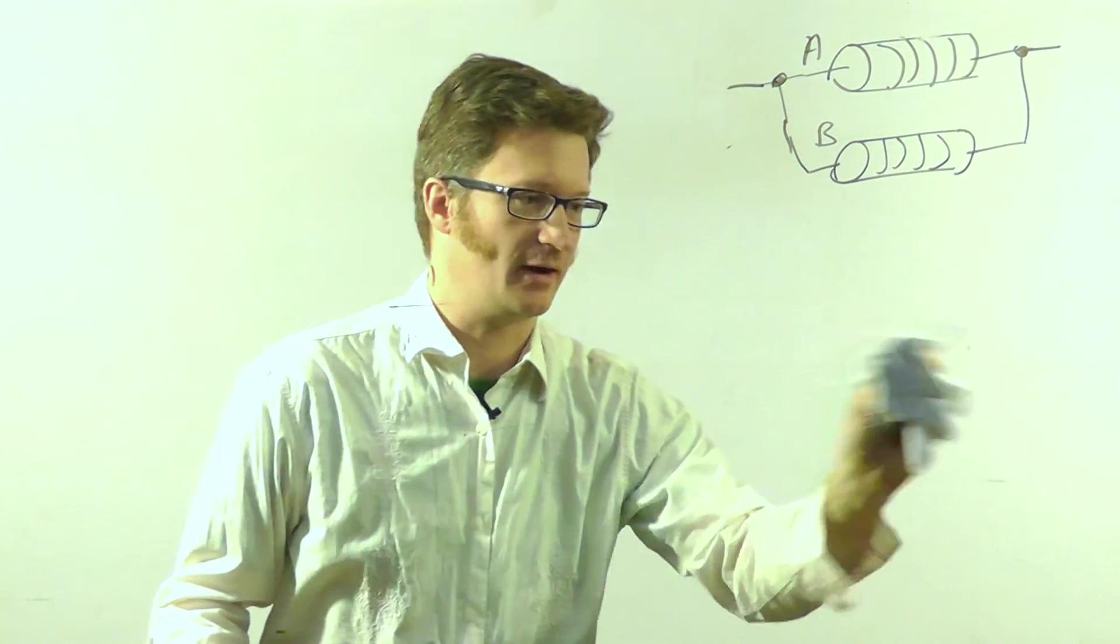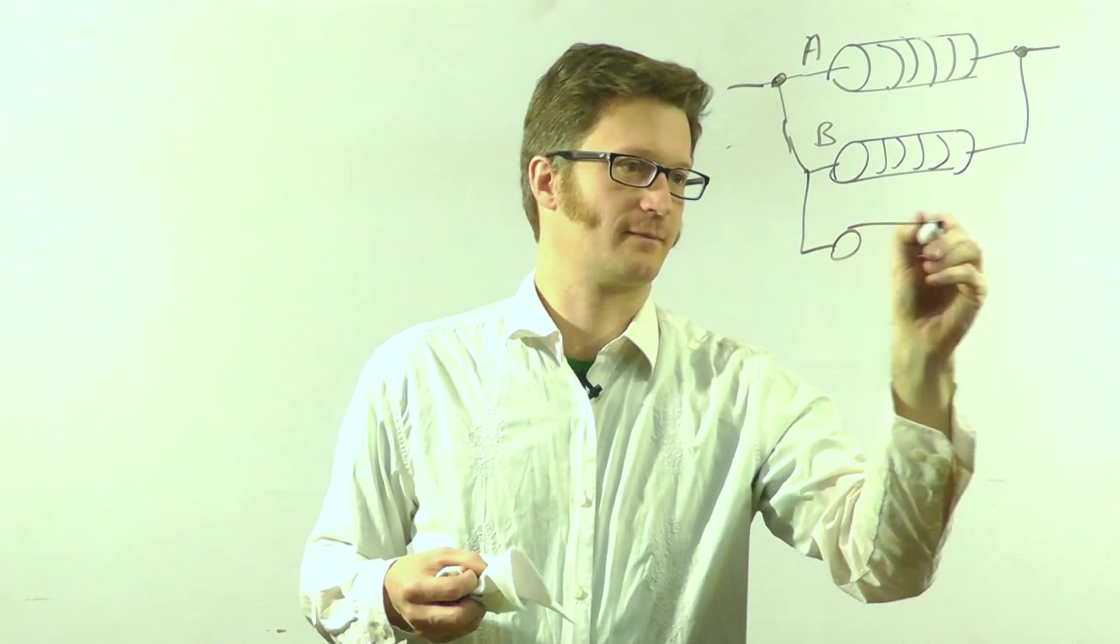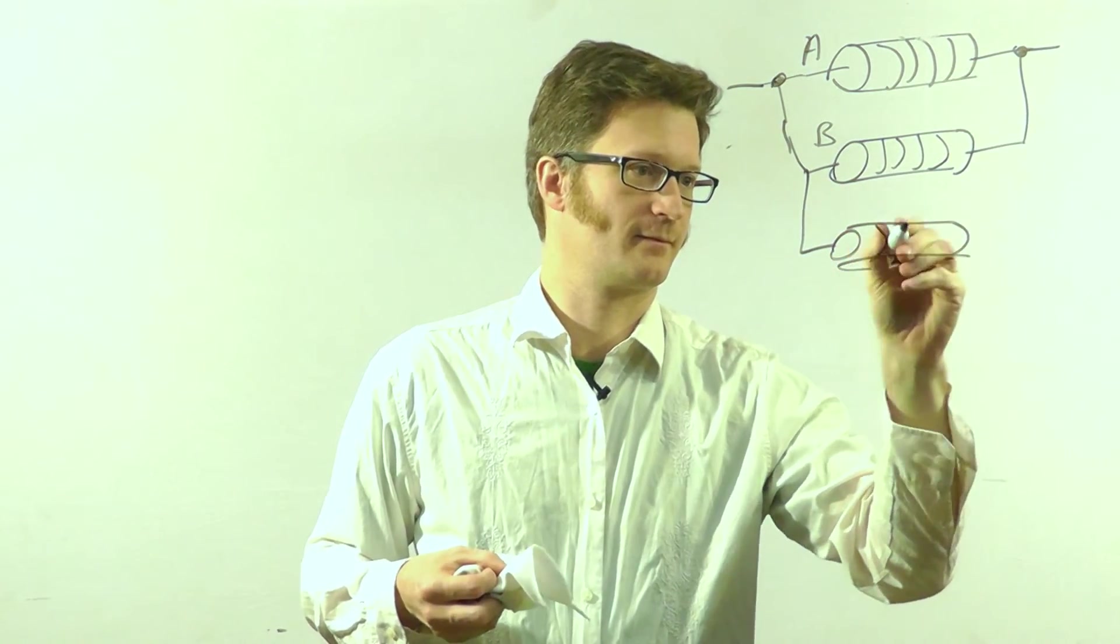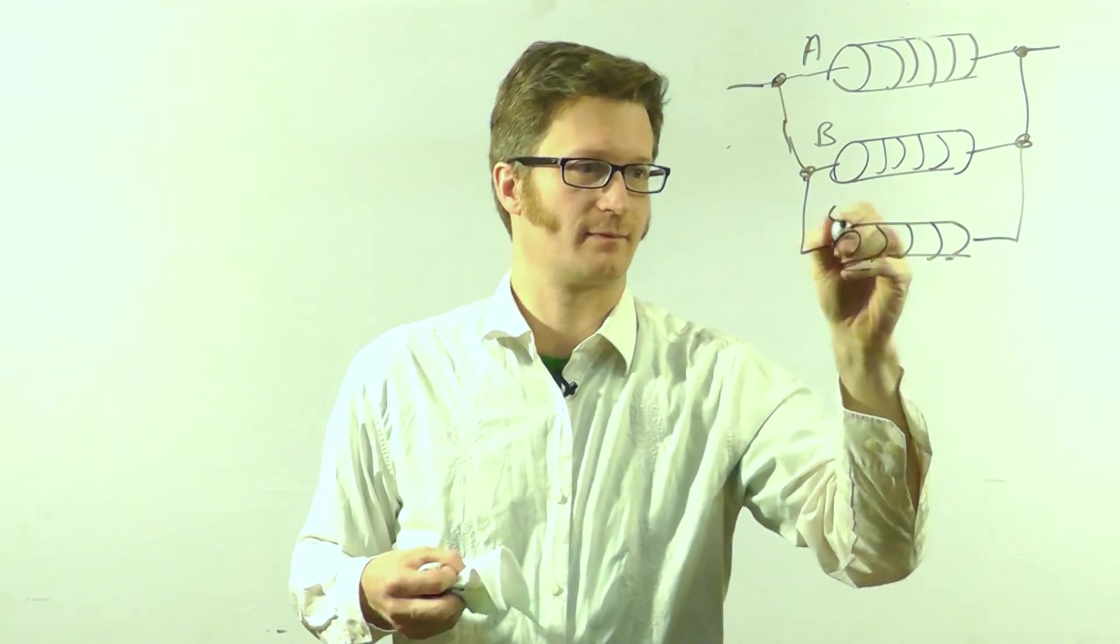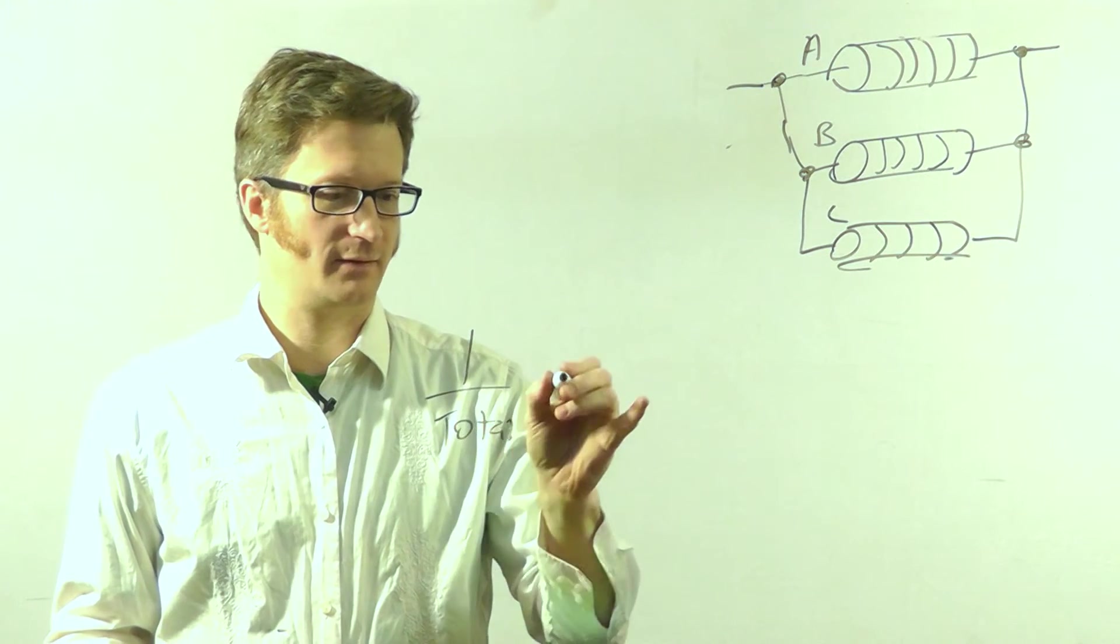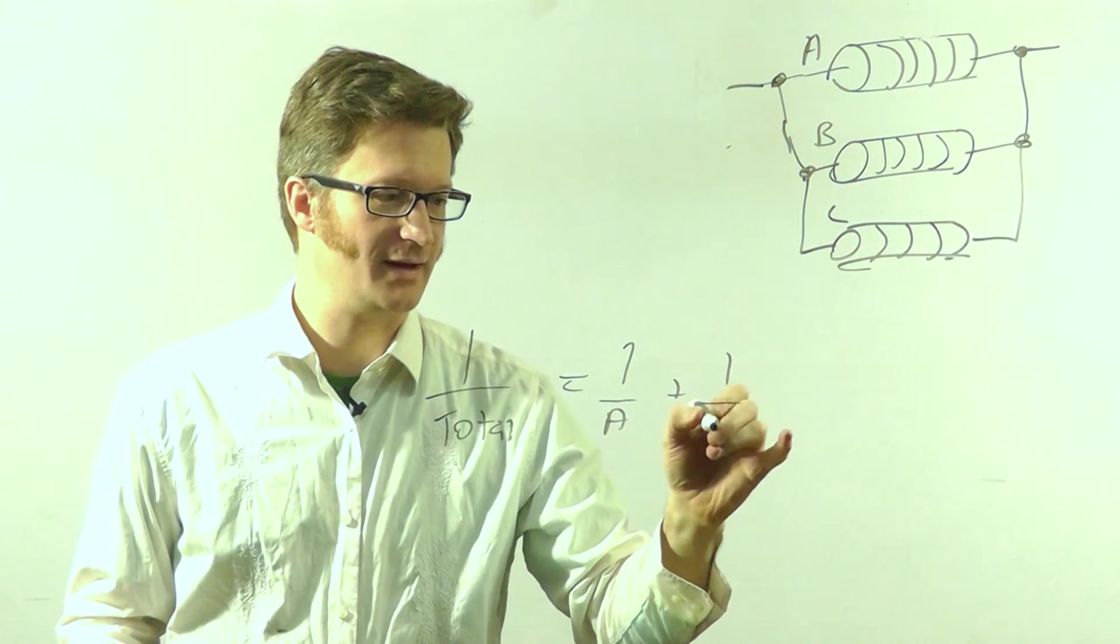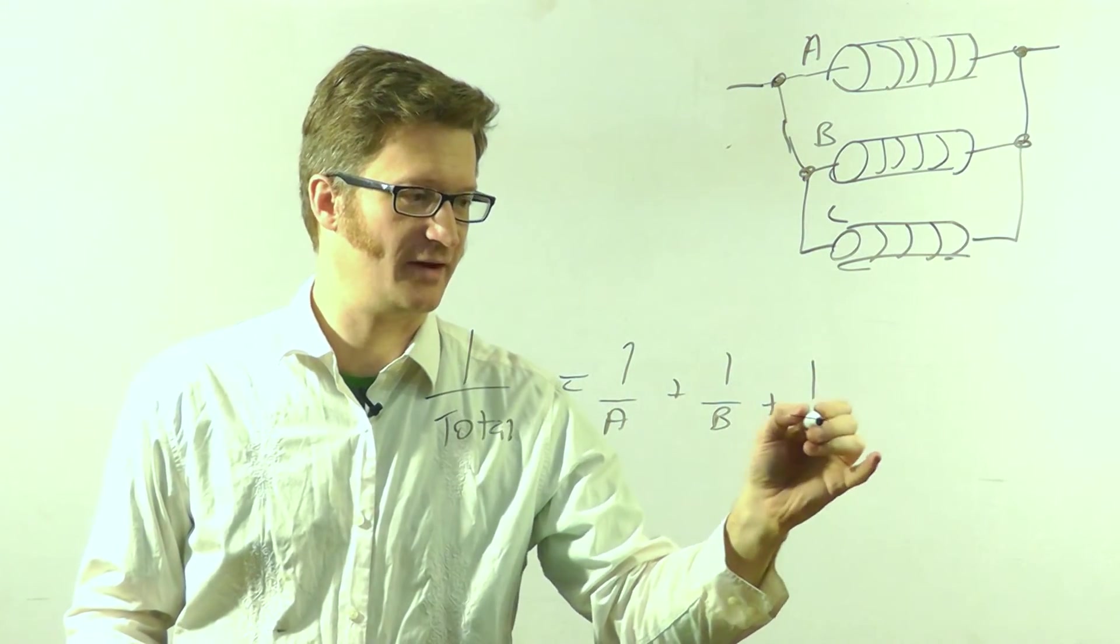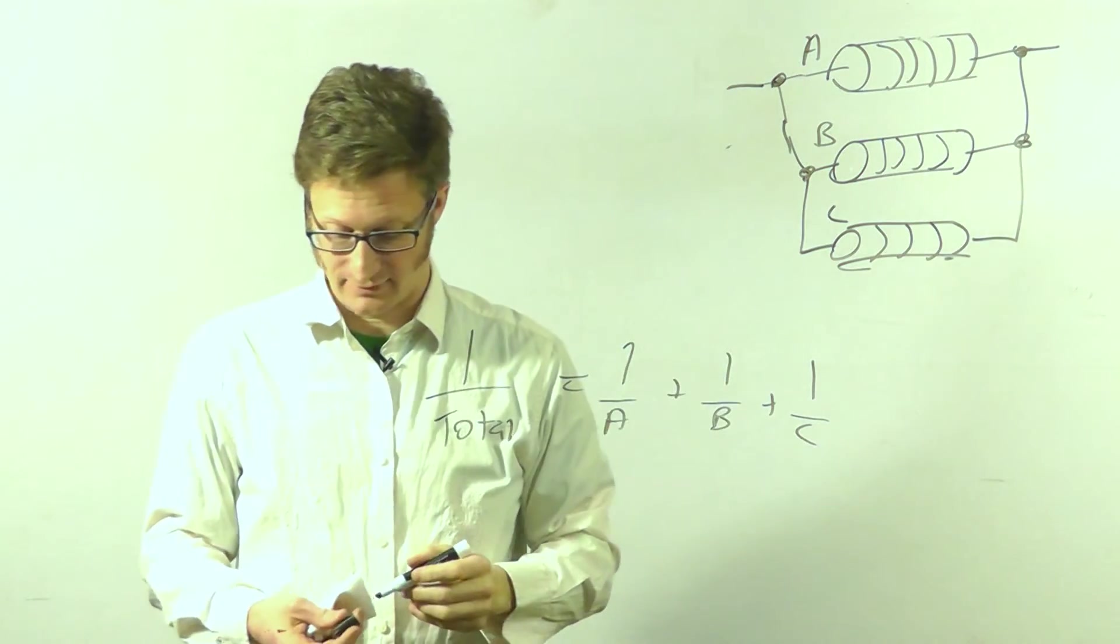If you have a third resistor in there, it's the same way. One over total equals one over A plus one over B plus one over C. So calculate that out and you have your answer.